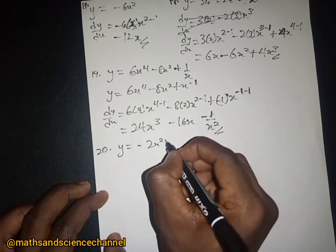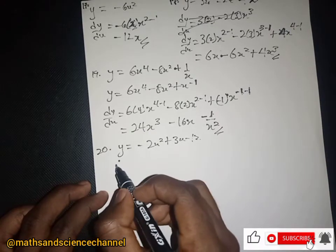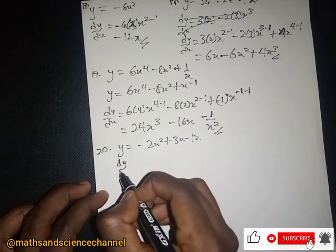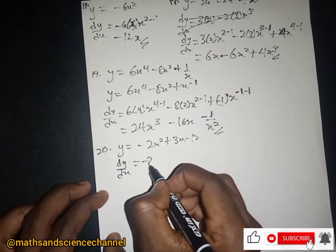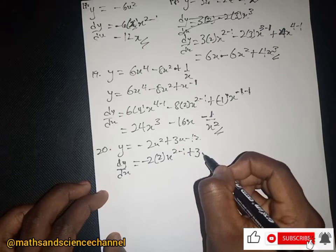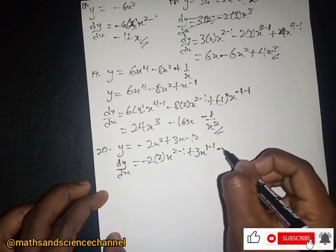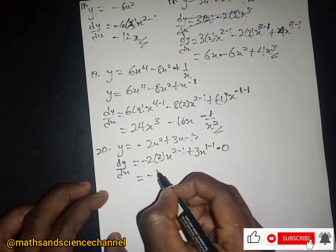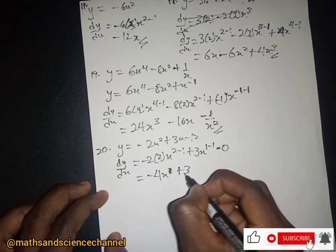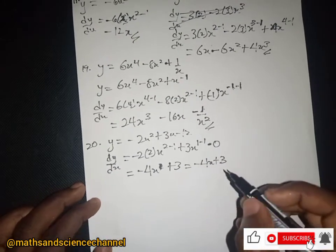We can have y equal to negative 2x squared plus 3x minus 12. The dy/dx will be — negative 2 times 2 giving x to the power 1, plus 3 times 1 for x to the power 0, and the constant differentiates to zero — so we get negative 4x plus 3.